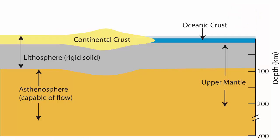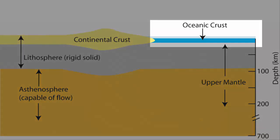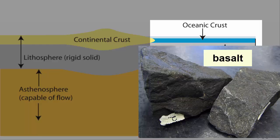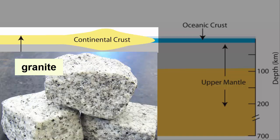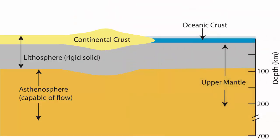Let's look more closely at the crust. It is composed of two kinds. Denser oceanic crust, which is thin and mostly made of a rock called basalt. Its density makes it sink low, which is why it is the crust that underlies the lowest basins on the planet, the oceans. Continental crust is much thicker and less dense than ocean crust. It is made out of many kinds of rocks, but its average composition is similar to that of a rock found on the continents called granite. The buoyancy and thickness of continental crust make it float high above the oceans, creating the continents.